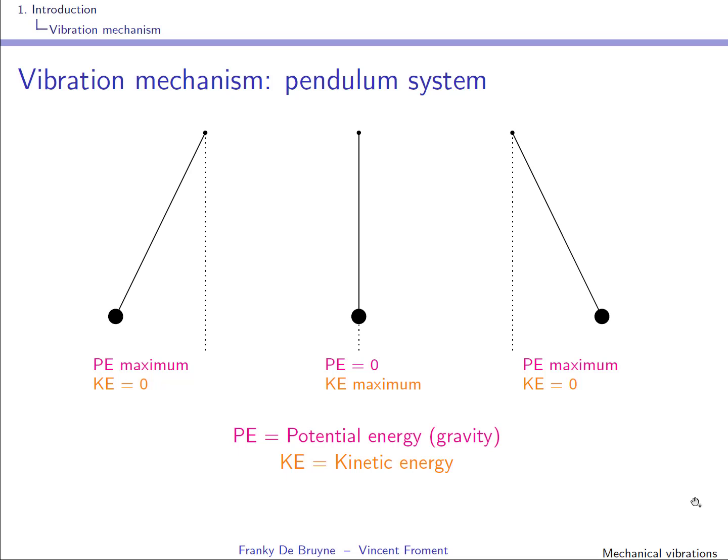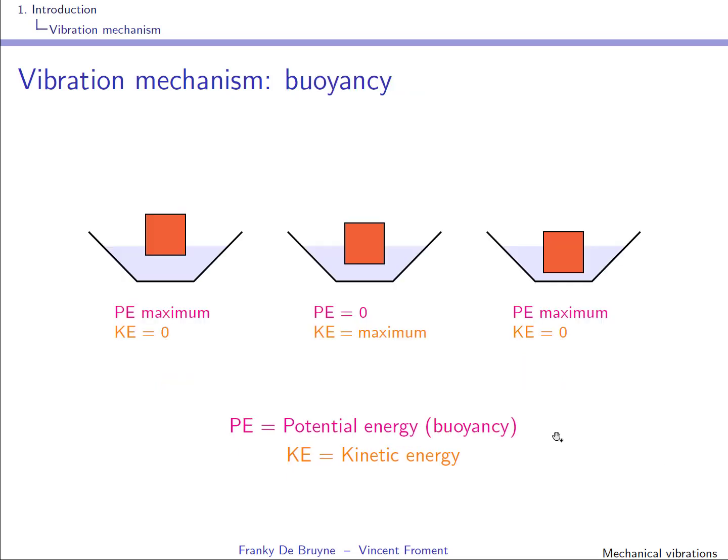We've seen this transfer between potential energy and kinetic energy that characterizes vibration. In the previous example, the restoring force derived from a spring, so the potential energy is the energy stored in the spring. Here the restoring force derives from gravity, and the potential energy comes from gravity — but the principle is the same. In the next example, it's again the same principle, but the potential energy comes from buoyancy.